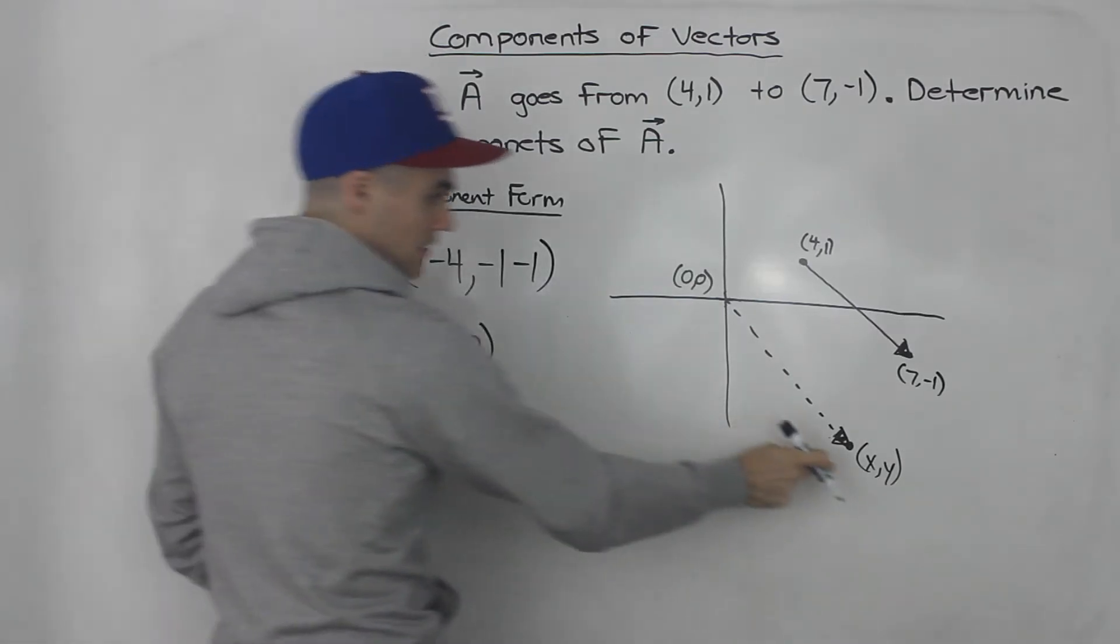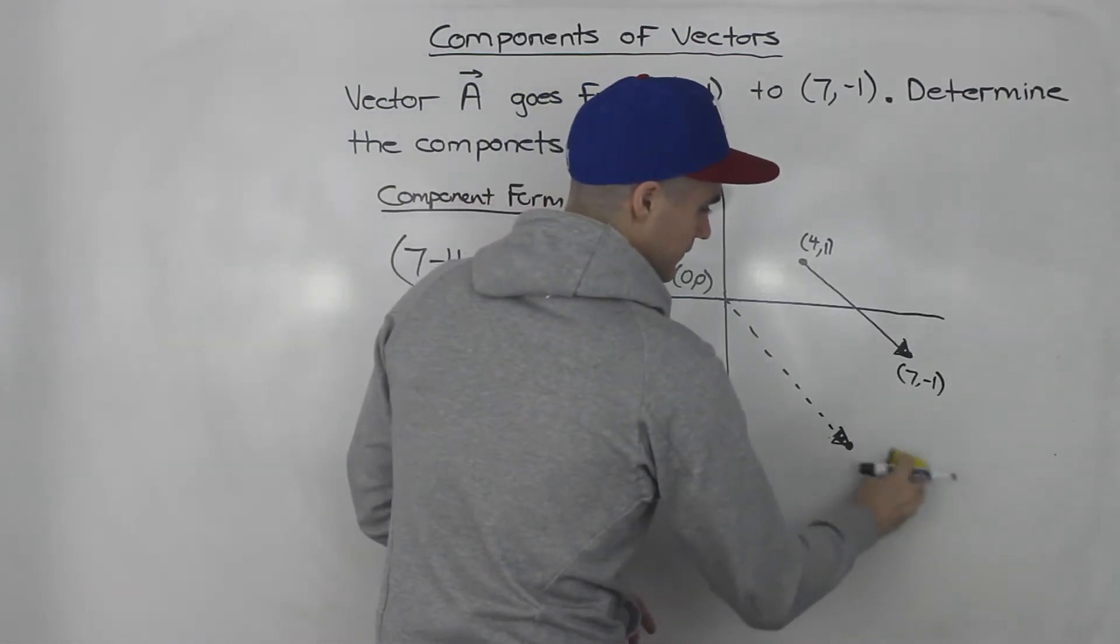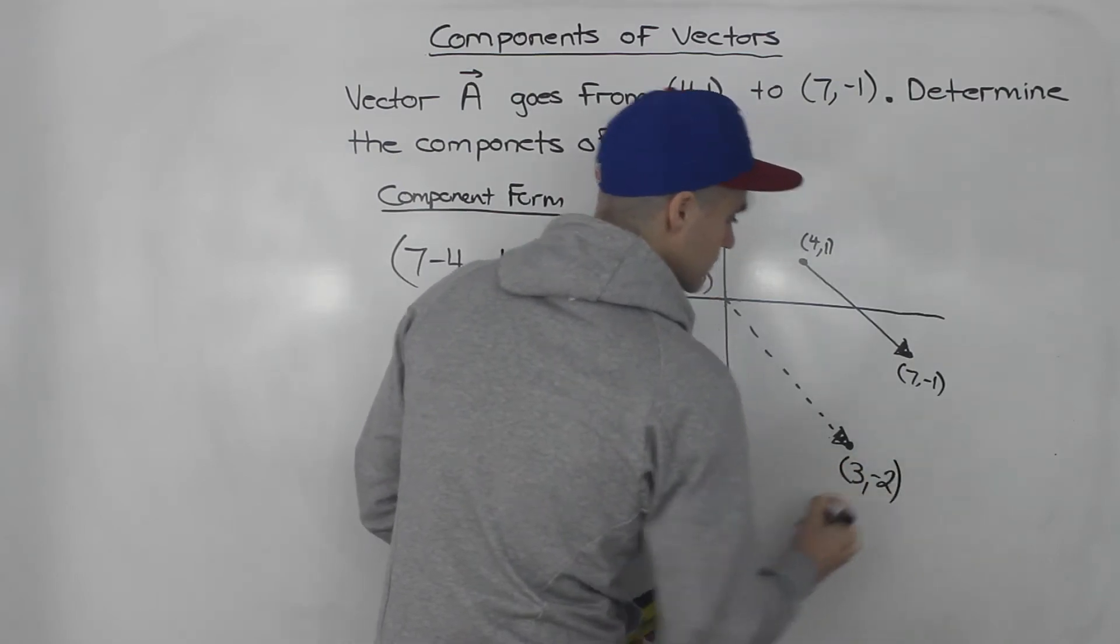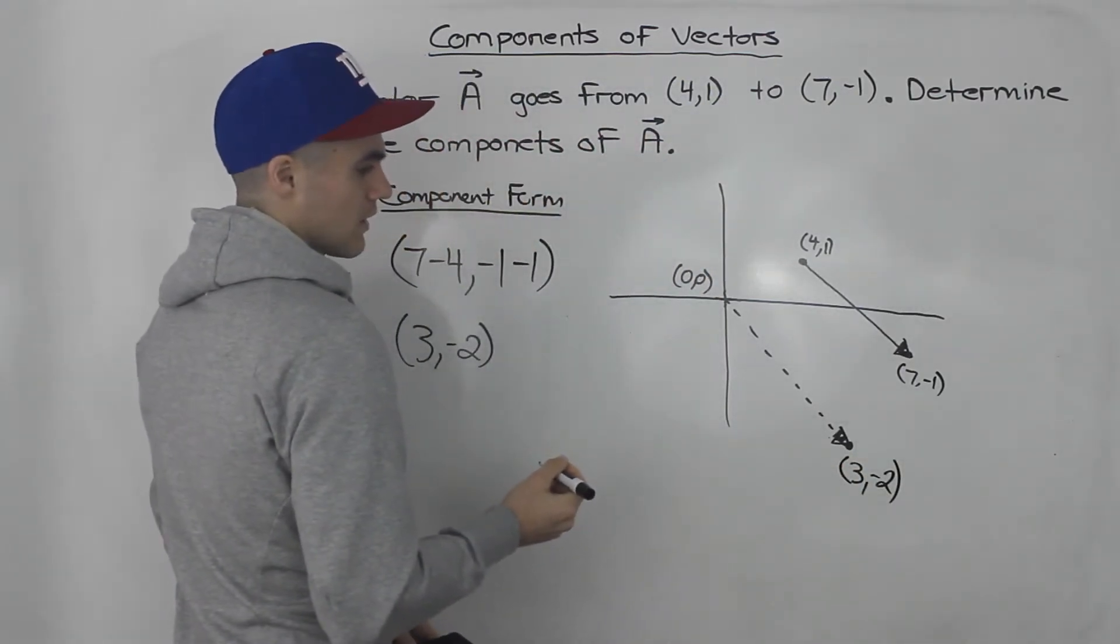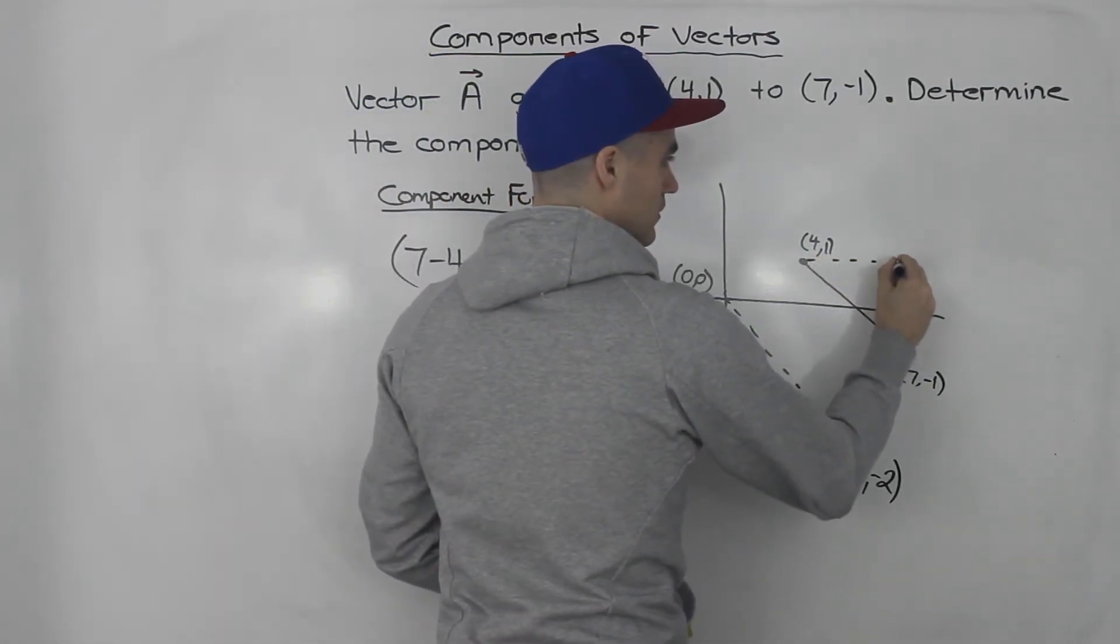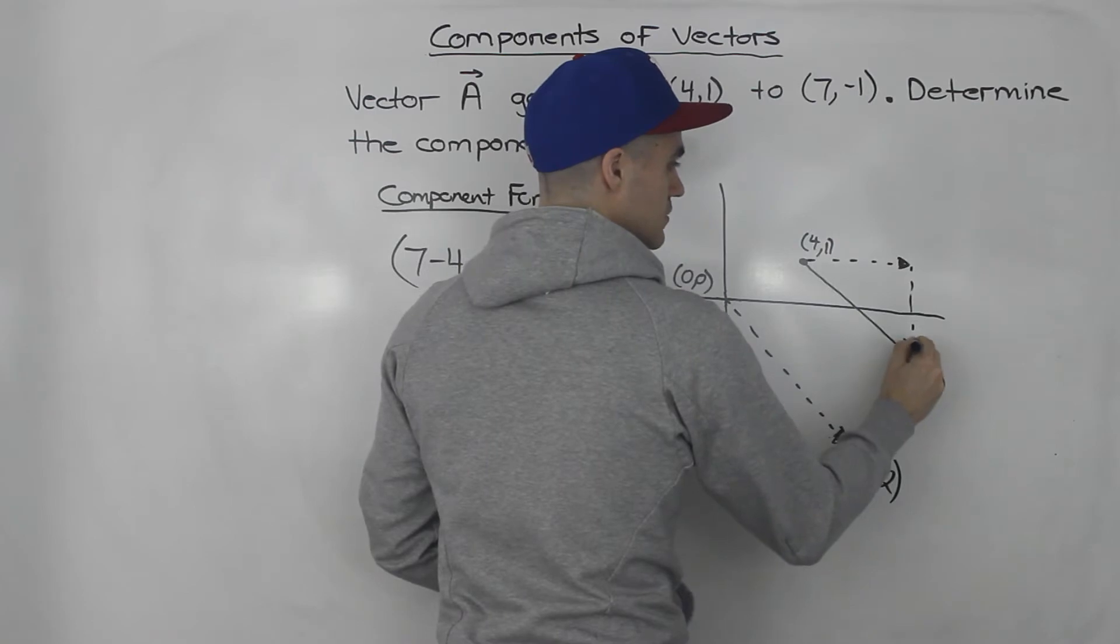So this here is that coordinate (3,-2). We basically took this vector and broke it down into components.